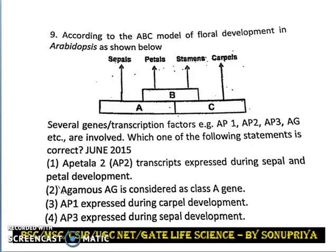Now let us discuss another question about the formation of the different whorls. According to the ABC model of floral development in Arabidopsis as shown in the diagram, several genes or transcription factors — APETALA1, APETALA2, APETALA3, and AGAMOUS — are involved. From class A, sepals are present; from class A plus B, petals; from class B plus C, stamen; and from class C alone, carpel. We have to find which of the following statements is correct.